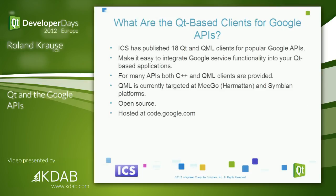ICS has developed and published about 18 Qt and QML-based clients for popular Google APIs. Our goal was to easily integrate Google service functionality into Qt-based programs. For most of these APIs, we provide both C++ QWidget-based and QML clients. The QML work was originally targeted at Meego and Symbian platforms. All projects are open source and hosted at code.google.com.